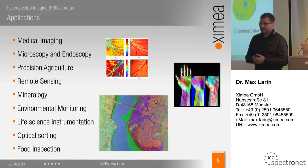Where is hyperspectral imaging used today and what are the possible applications? The range is extremely wide — wherever regular imaging is not capable of delivering sufficient information for making a wise decision about objects. Hyperspectral imaging can help in medical imaging to detect changes in skin reflectance and identify diseases at a very early stage. That includes microscopy and endoscopy, precision agriculture for monitoring fields, remote sensing — which was actually the first application — and mineralogy, among many others.